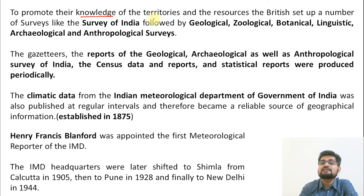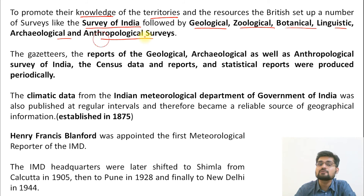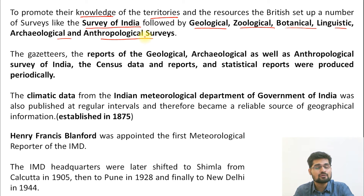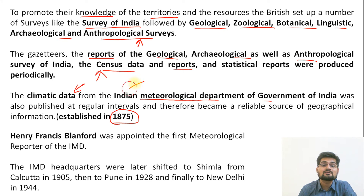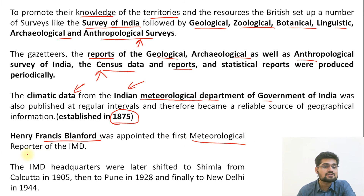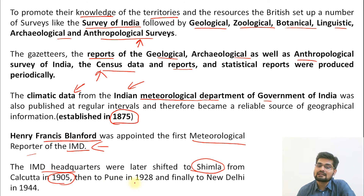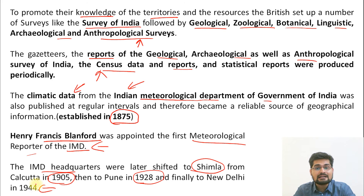To promote knowledge of territories, the British set up various surveys in India: the Geological Survey of India, Zoological, Botanical, Linguistic, Archaeological, and Anthropological surveys. All were established to gain detailed geographical knowledge of culture, people, places, anthropology, and language, documented in British gazetteers. In 1875, the Indian Meteorological Department was established under the Government of India. Henry Francis Blanford was the first person appointed as reporter to the Meteorological Department. IMD headquarters later shifted from Calcutta to Shimla in 1905, then to Pune, and finally to Delhi in 1944.